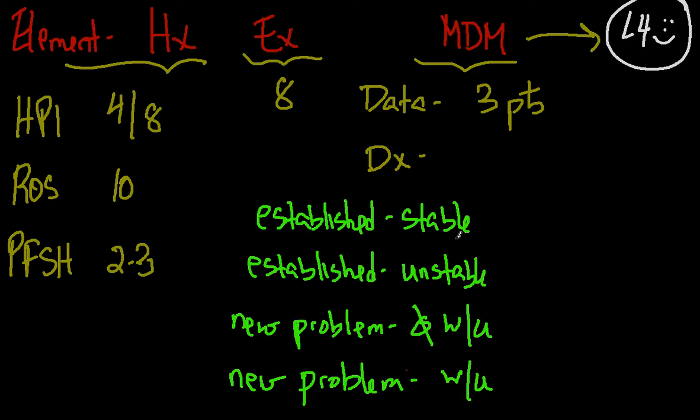Establish diagnoses that are either stable or unstable, and then new diagnoses that are either going to be worked up by you or not worked up by you. So those are the four items in general for the diagnosis component.